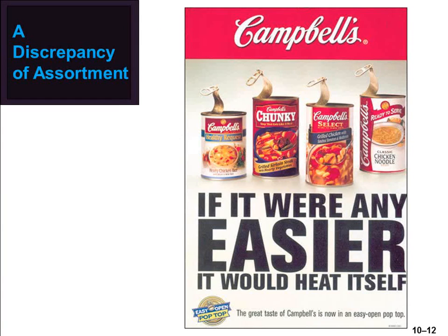The discrepancy of assortment is the difference between the lines of products a producer typically makes and the assortments final consumers or users want. Like discrepancies of quantity, intermediaries are equipped to deal with discrepancies of assortment. For example, Campbell's specializes in producing soup as its major product line. However, consumers purchasing food items typically want to buy other things besides soup during a trip to the grocery store. Food wholesalers and retailers adjust this discrepancy by bringing assortments of different types of foods to consumers.